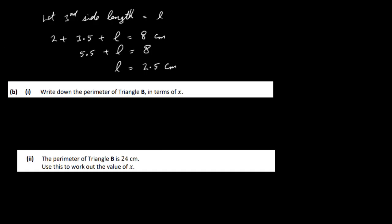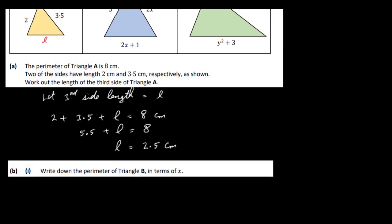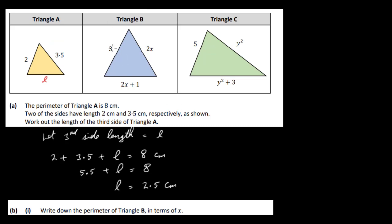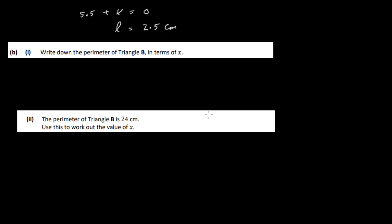In part two, write down the perimeter of triangle B in terms of x. The perimeter of triangle B is 3 plus 2x plus 2x plus 1. When we add those, we get 3 and 1 is 4, 2x and 2x is 4x. So it's 4 plus 4x centimeters.